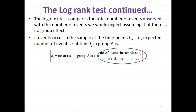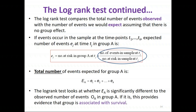That quantity is then multiplied by the number at risk in group A at time point TJ, giving the number of events expected at TJ if there's no group effect. We add up all these expected events across all time points for group A to get the total expected events, then compare these to the total observed events for group A. That difference is compared against a chi-square distribution to measure the strength of evidence against the null hypothesis.